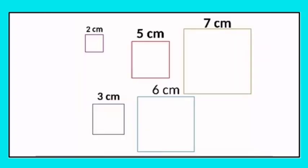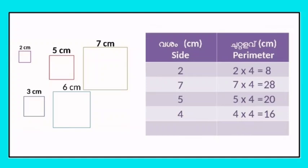Now we have some squares here. A square has 4 sides. We will draw a square — for example, with side 7 cm. The perimeter is the total measurement around the shape.